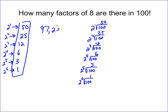So there are 97 twos in 100 factorial. Since 8 requires groups of three 2's, we divide 97 by 3, which gives 32. So there are 32 factors of 8 in 100 factorial — and that's your answer.